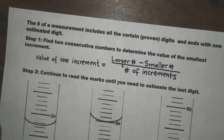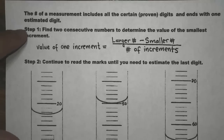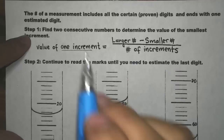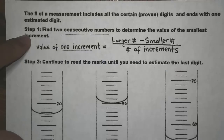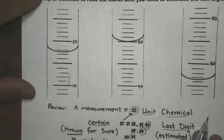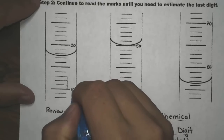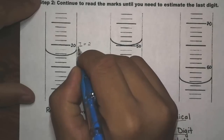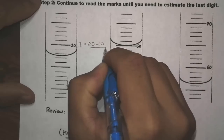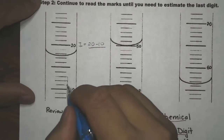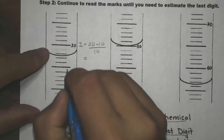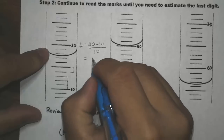Here is the equation to determine the value of one increment — specifically the smallest one. We look for two consecutive numbers, take the larger number minus the smaller one, divided by the number of increments. In this example, we have 10 and 20, so the value of one increment equals (20 − 10) divided by 10, which gives us 1.